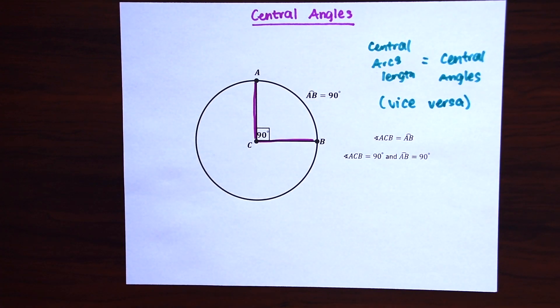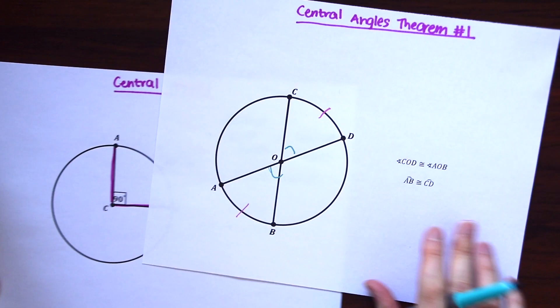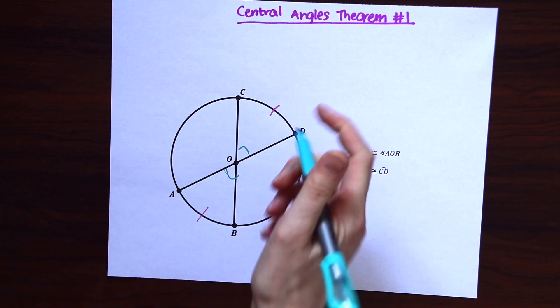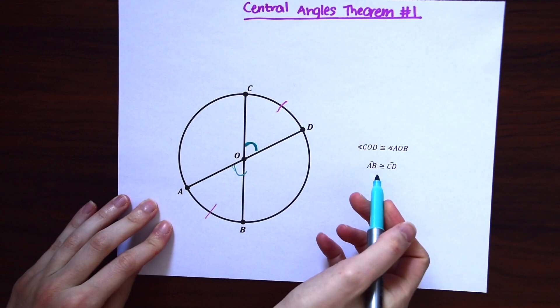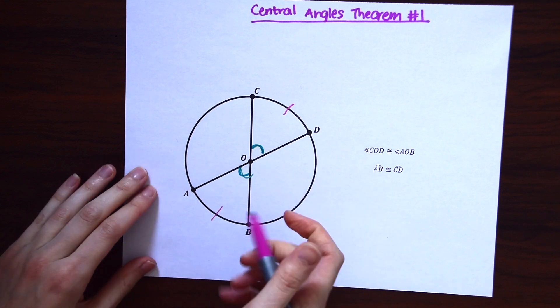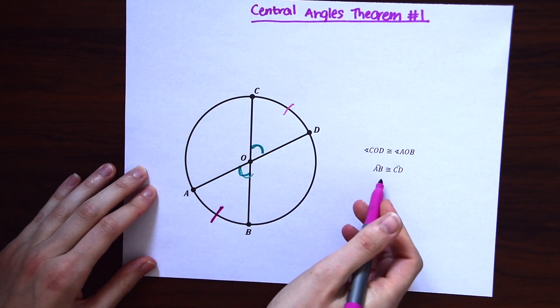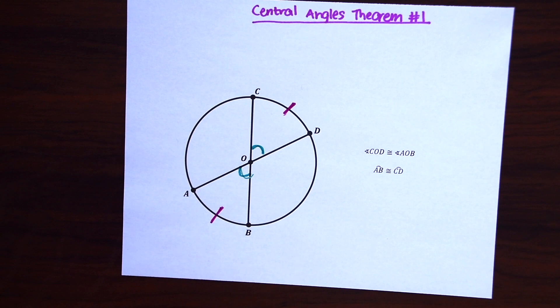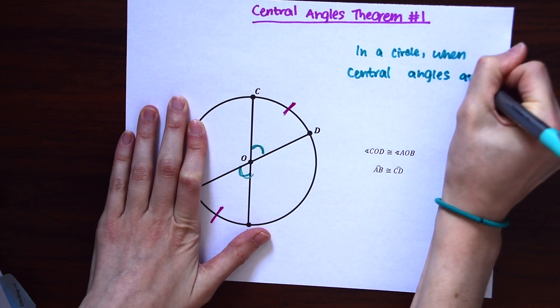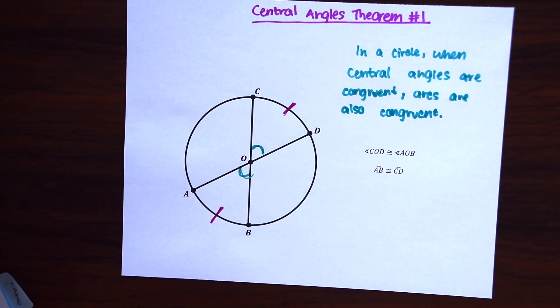So there are two central angle theorems that we're now going to look into. So our first central angles theorem tells us that angle COD is congruent to angle AOB, marked in this green color. And because of that we know that arc AB is congruent to arc CD. So in English words, all this says is in a circle when central angles are congruent, arcs are also congruent.